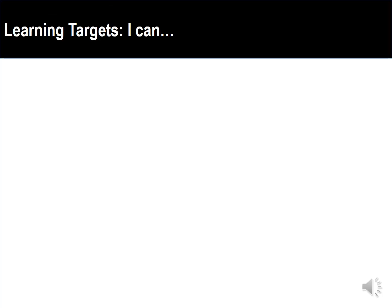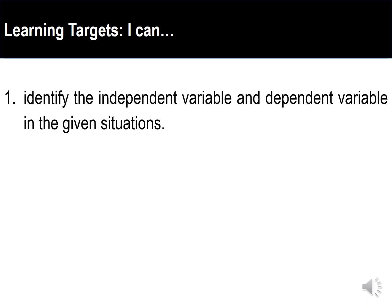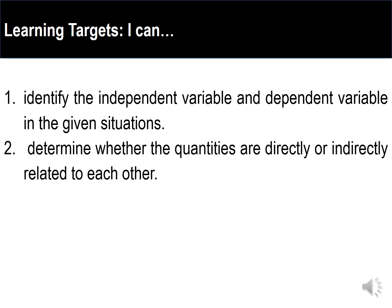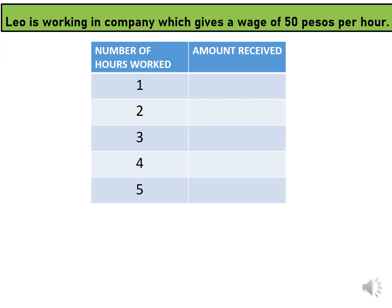We have two learning targets. First, I can identify the independent variable and dependent variable in given situations, and second, determine whether the quantities are directly or indirectly related to each other. Let us start with this situation: Leo is working in a company which gives a wage of 50 pesos per hour. Let us make use of a table of values to look into the relationship of the two variables.